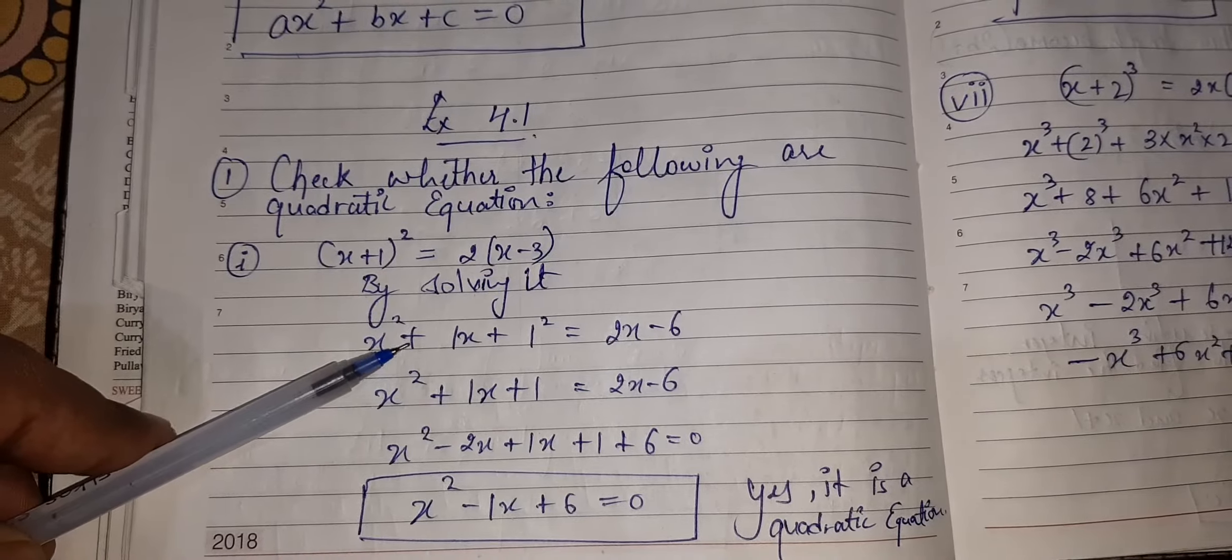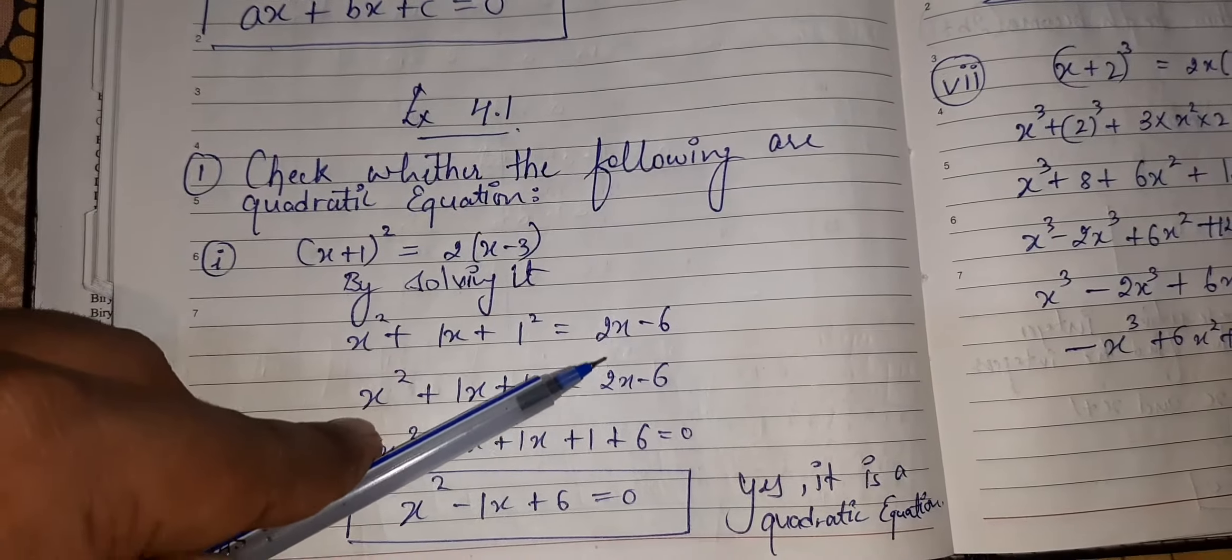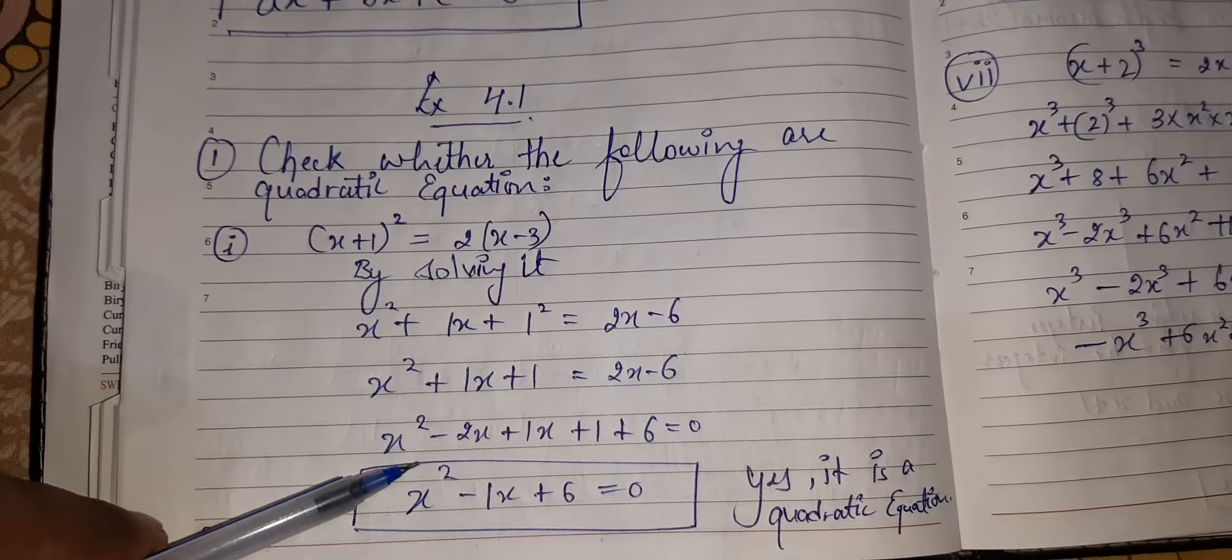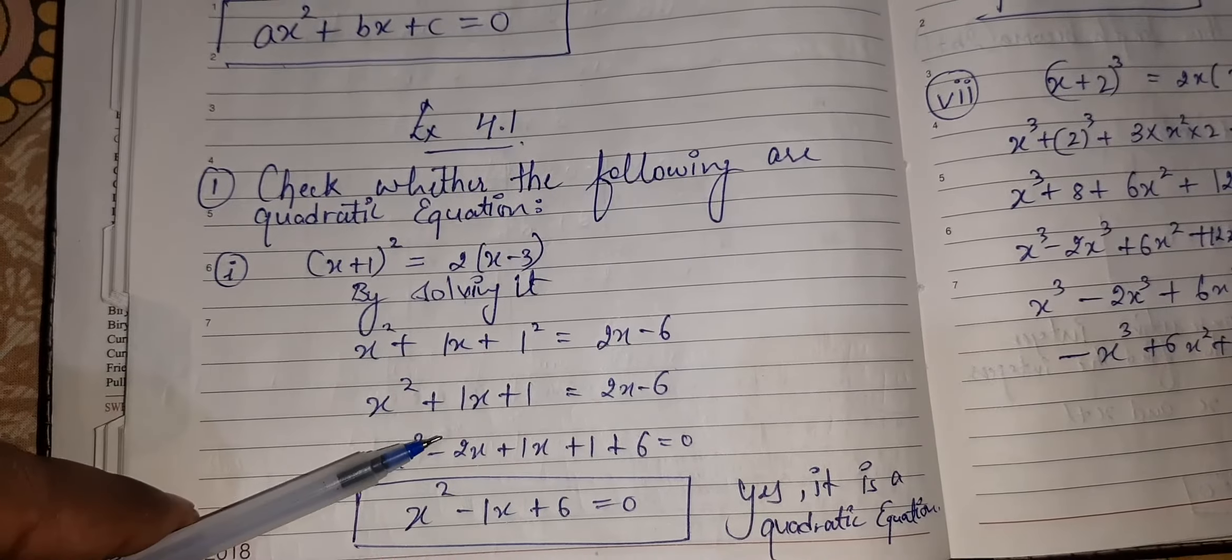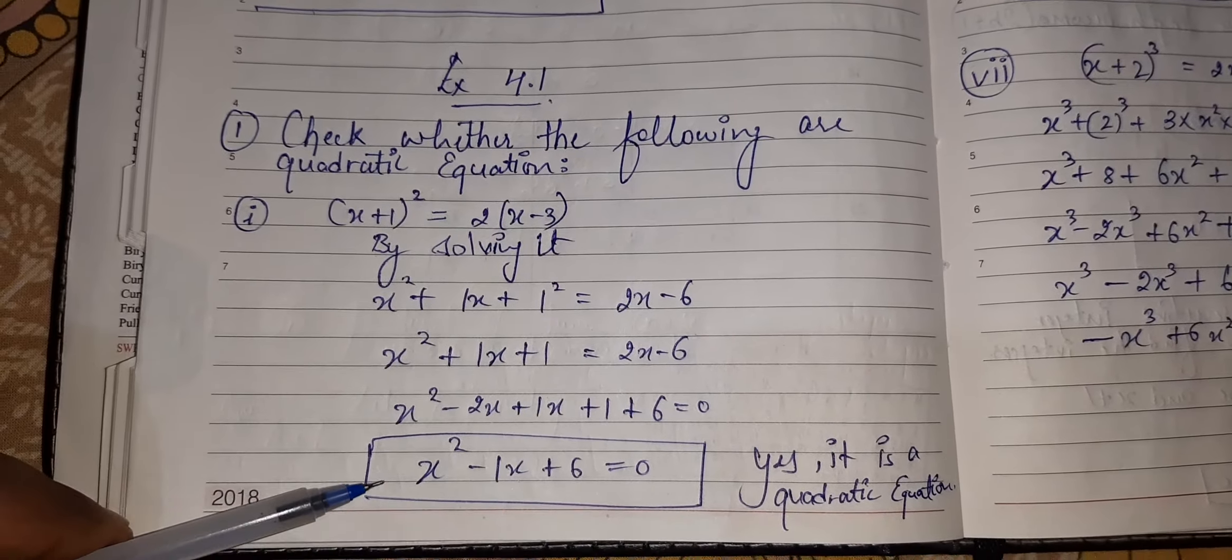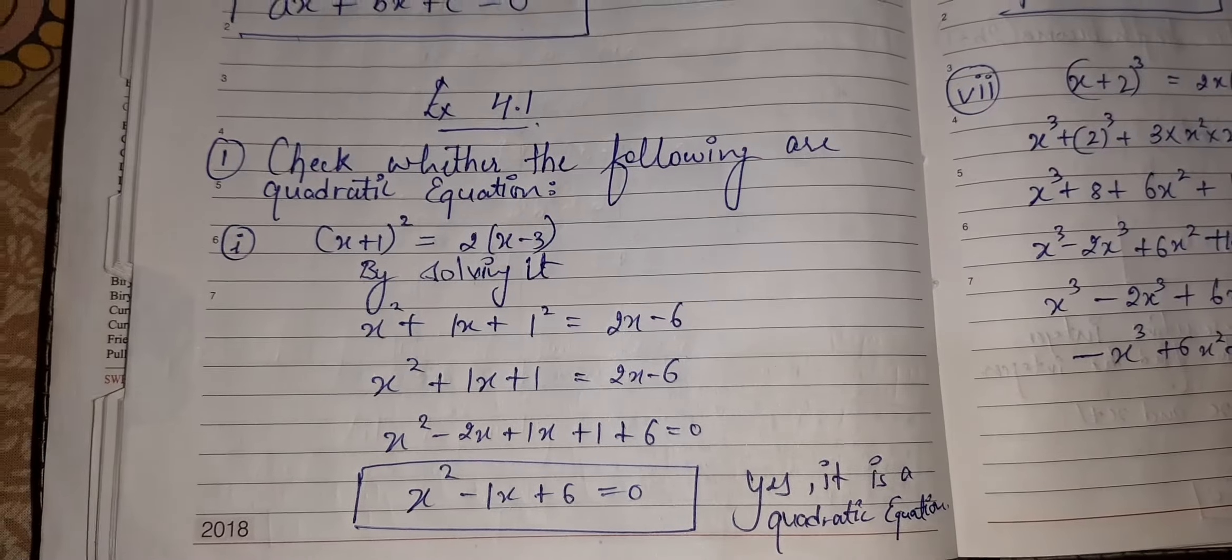X minus 3 are in the bracket. I have opened the square, 2X minus 6. I bring 2X this side and minus 6 this side. Solving it, I have got this. X squared term is there. Yes, it is a quadratic equation.